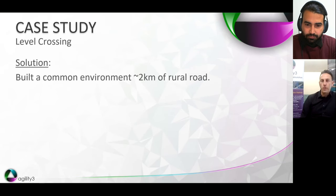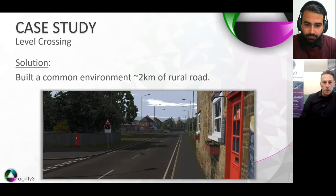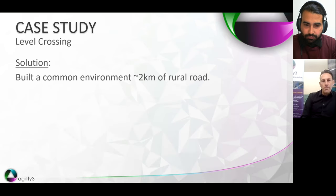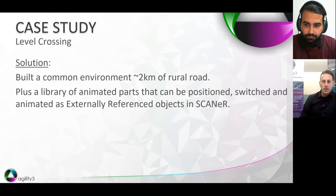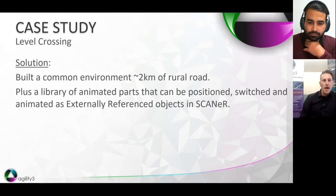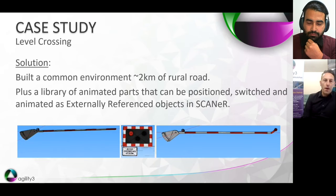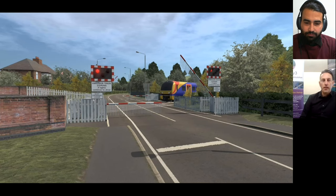We built a common environment used across all trials — approximately two kilometres of rural road. The level crossing is off in the distance in the screenshot but not yet constructed. The generic road took just a few weeks to develop. To enable us to build the crossing, we created a library of animated parts — barrier models, flashing light models — that can be positioned, switched in and out, animated, rotated, and moved as required, scripted as externally referenced objects in Skylar to create the animated level crossing.